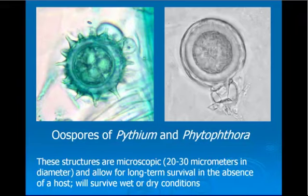These oospores would be hard enough to kill with disinfectants if they were naked, but generally they are buried within root tissue or stem tissue where disinfectants are not going to have much effect. These are extremely small structures — 20 to 30 micrometers — and we can only see them with a microscope.